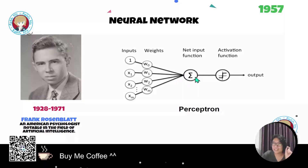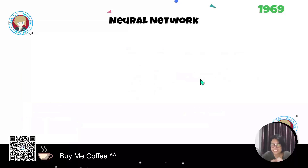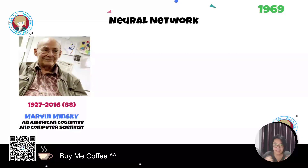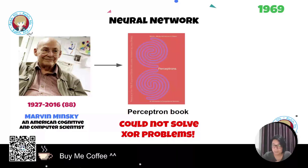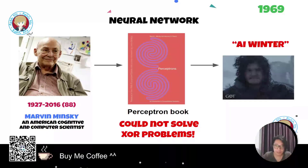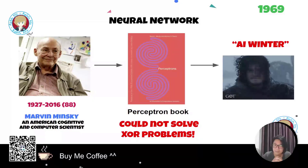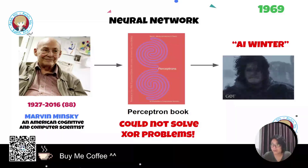In 1969, Marvin Minsky, an American cognitive and computer scientist, discovered limitations of the perceptron — that it could not solve XOR problems. He wrote the book 'Perceptrons' describing why the perceptron cannot solve XOR problems. After this, it came to the AI winter, meaning no one jumped into the field, like a dark period for many years where no one could solve the problem.